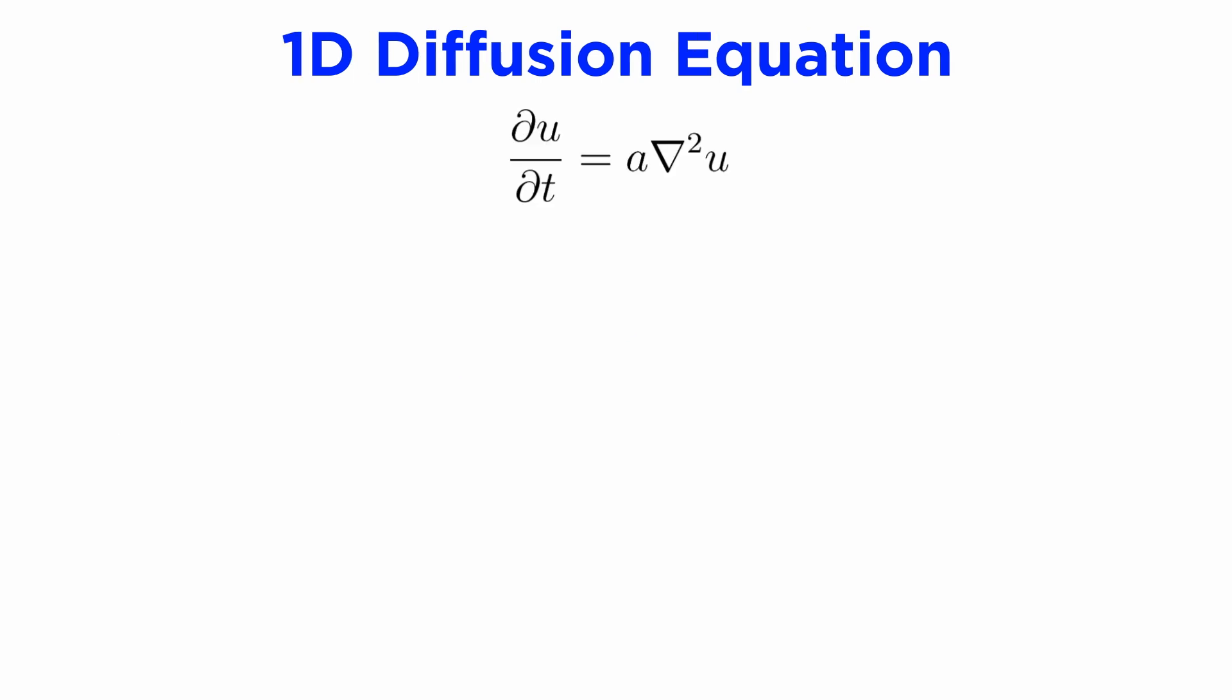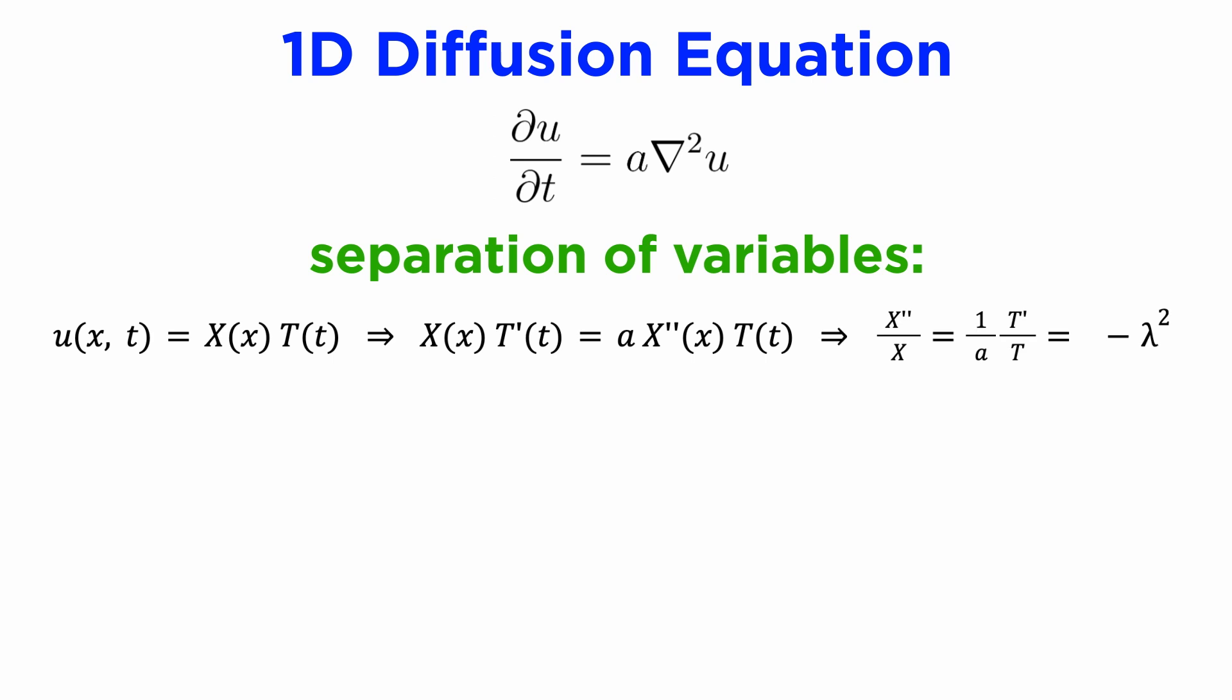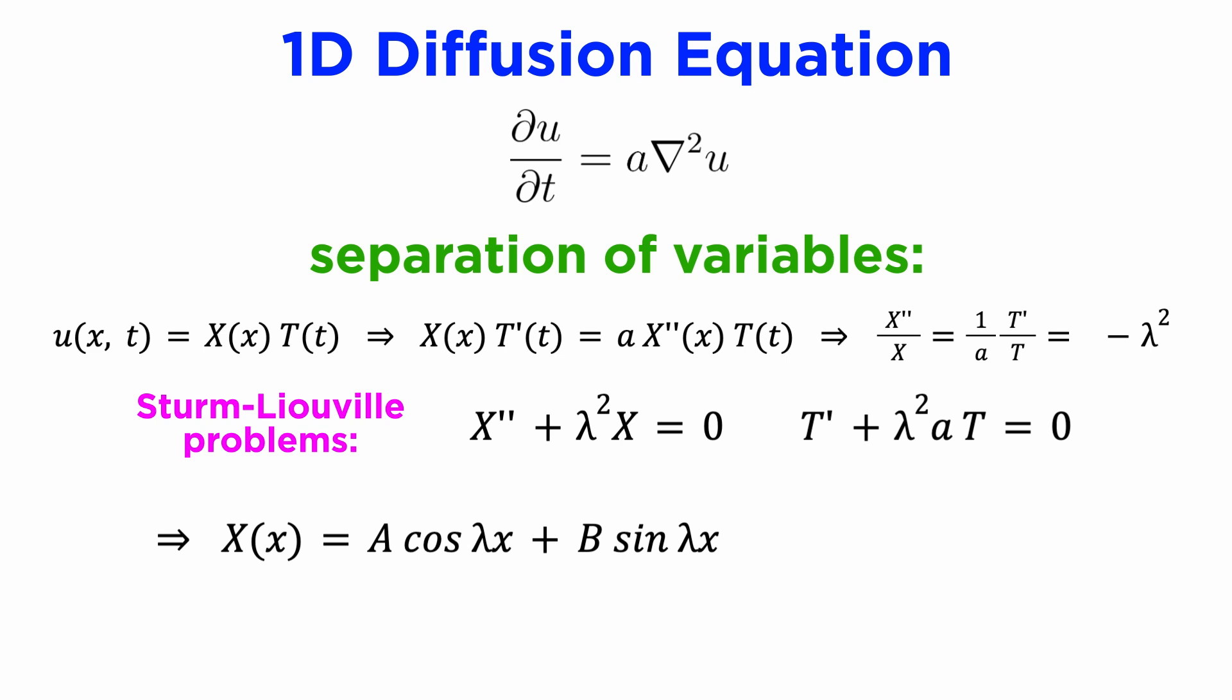Let's solve the 1D diffusion equation using the hopefully familiar method of separation of variables. We assume a solution of the form u of x t equals capital X of x times capital T of t. Subbing this in and separating the equation gives a second order ODE in x and a first order ODE in t, where we have chosen negative lambda squared as the separation constant. When we solve these ODEs, we find trigonometric solutions in x and exponential solutions in t.